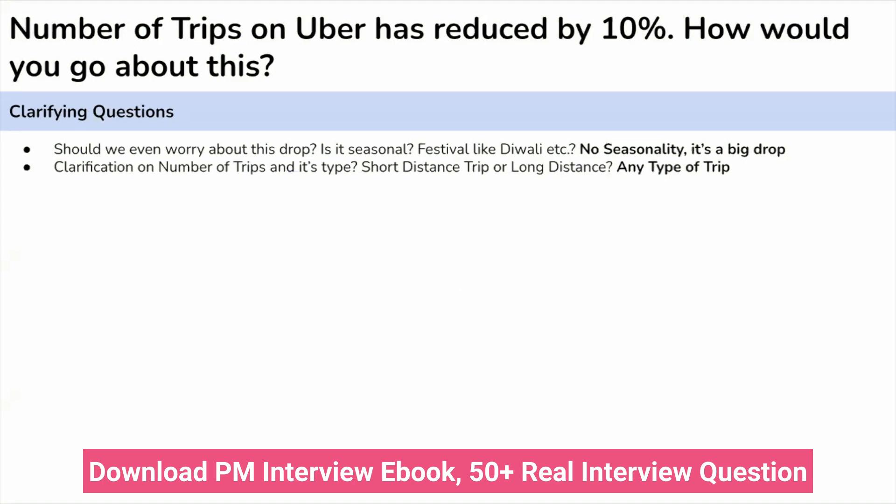The second question which we should ask is about the number of trips itself. Is this a drop only for certain types of trips — like long trips, short trips, intercity trips? Because Uber has different types of trip options as well. Here the interviewer confirmed that this drop is across all types of trips on the platform, be it long, short, intercity or intracity.